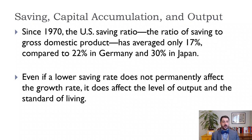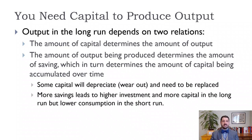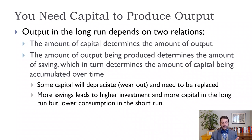We want to think about the role of savings and investment in determining the capital stock and therefore in determining output per worker. As we showed in chapter 10, our production function says that more capital per worker will lead to more output per worker. So if we need more capital in order to produce more output, that's obviously going to depend on how much we invest. More savings leads to more investment, more investment leads to more capital, more capital leads to more output.